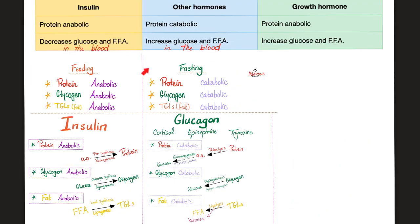This was the most important slide ever. Insulin is one land; all the other hormones are in the other hand. Insulin: protein anabolic, glycogen anabolic, triglyceride anabolic. The other hormones — such as glucagon, thyroxine, cortisol, epinephrine — are protein catabolic, glycogen catabolic, triglyceride catabolic.